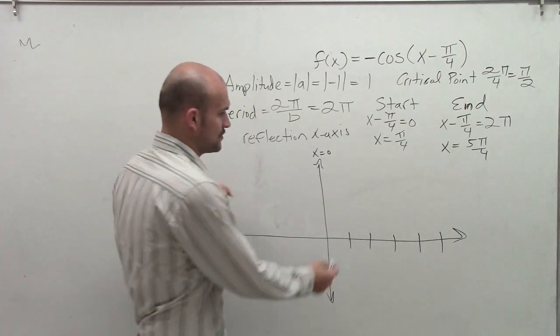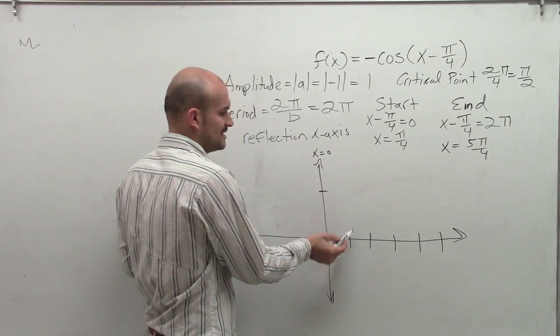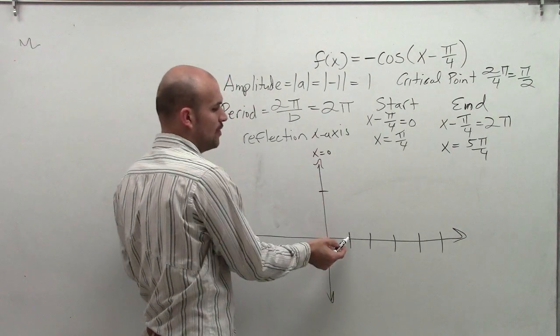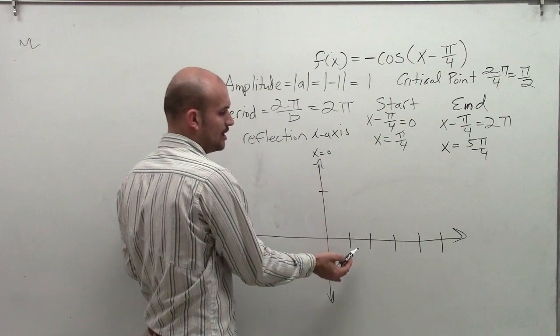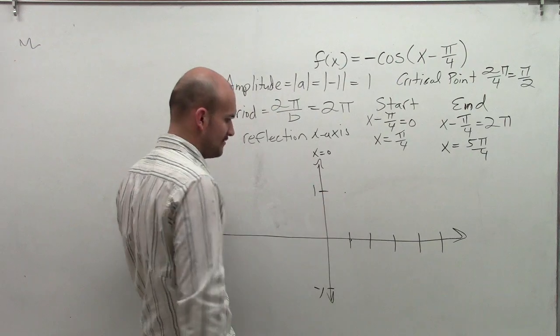So the first thing we're going to do is we're going to start here. Now remember, our amplitude is the half distance of our graph. So since our amplitude is 1 and we don't have any vertical transformations, the max height, I'm going to go up to 1, and the minimum height is going to go down to negative 1.